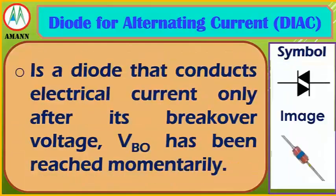DIAC (Diode for Alternating Current) is a diode that conducts electrical current only after its breakover voltage (VBO) has been reached momentarily.